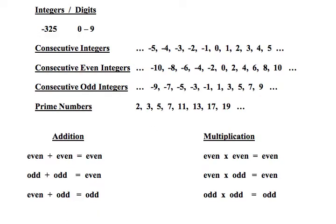Let's start by getting an overview of some of these topics. Integers are what you think of as a whole number. So negative 325 is an integer. Digits are the numbers 0 to 9. So this is an integer composed of three digits. The units or 1's digit is 5, then the 10's digit is 2, and the 100's digit is 3.